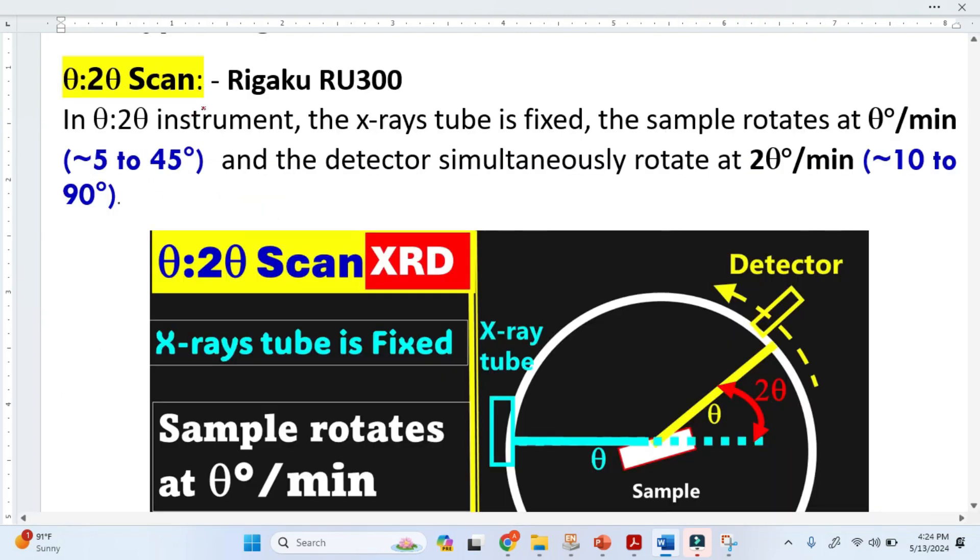There are basically two types of scans. The first one is called theta to 2 theta scan. In this arrangement, the X-ray tube is fixed and the sample rotates at theta per minute.